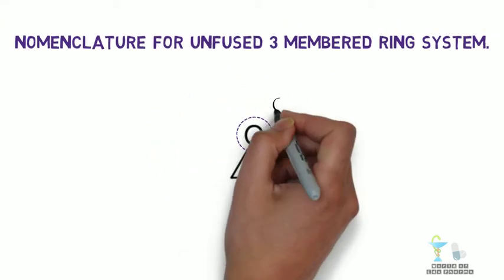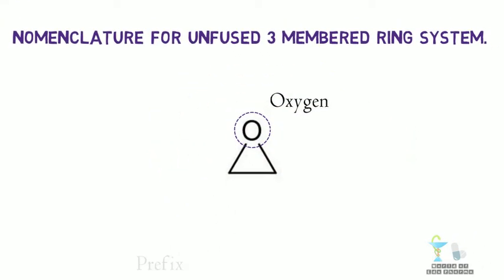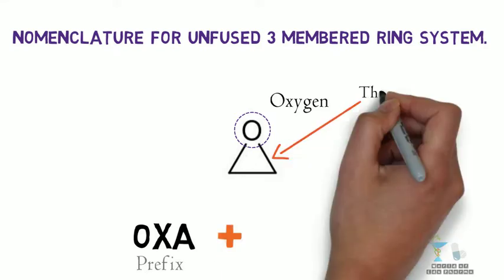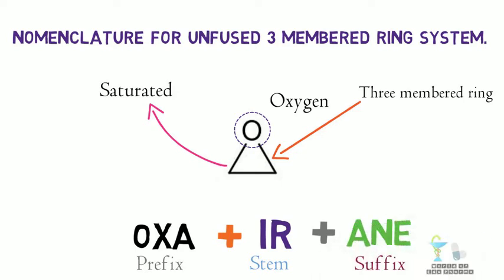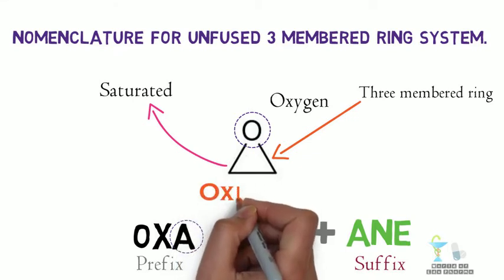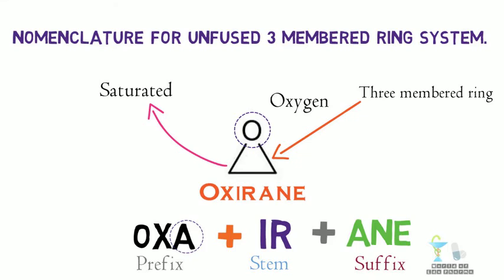Starting with this, consider this ring. The heteroatom present in this ring is oxygen. So the prefix OXA is used. As it is three-membered ring, the stem is IR. And finally as it is saturated, the suffix ANE is used. Now we got OXA plus IR plus ANE. Using the rule, the last vowel sounding alphabet A is removed from the prefix OXA. The name becomes OX plus IR plus ANE. Finally, the name is OXIRANE.